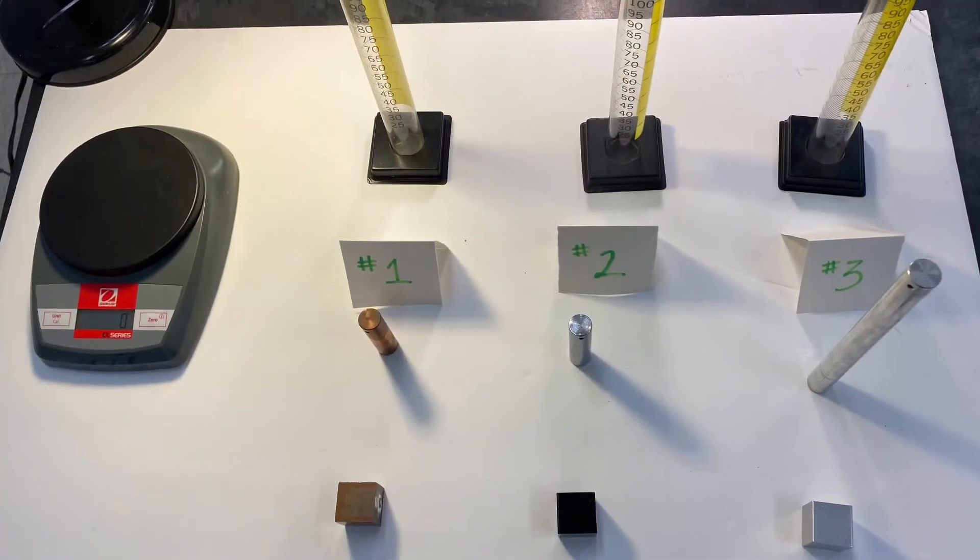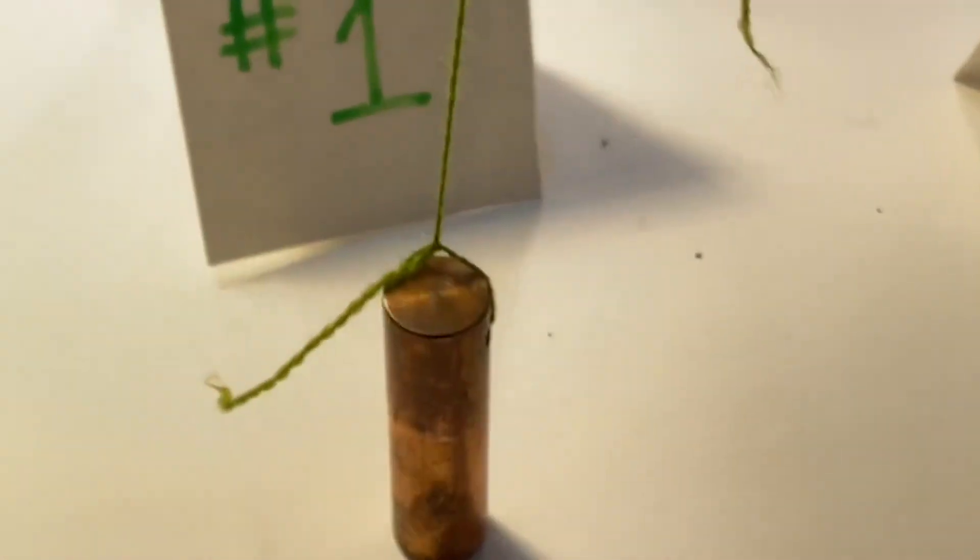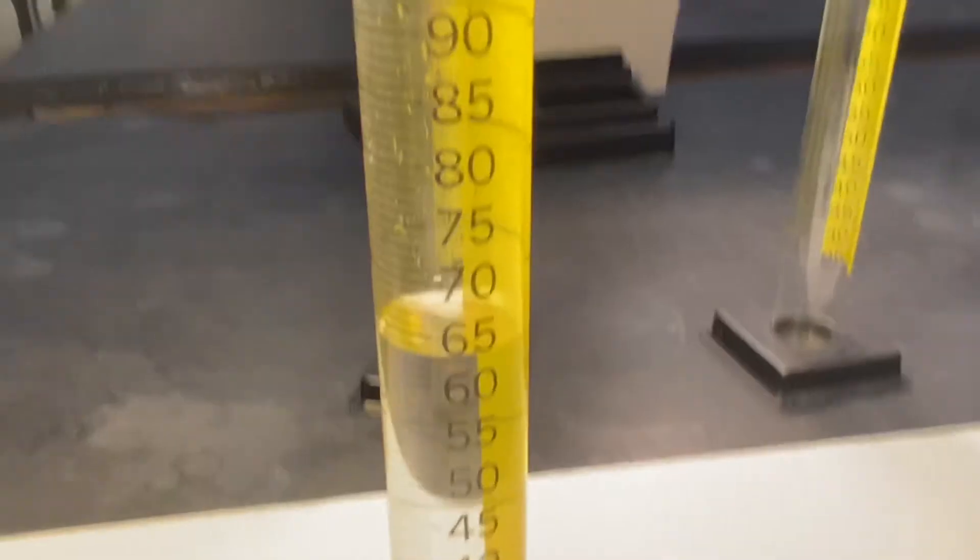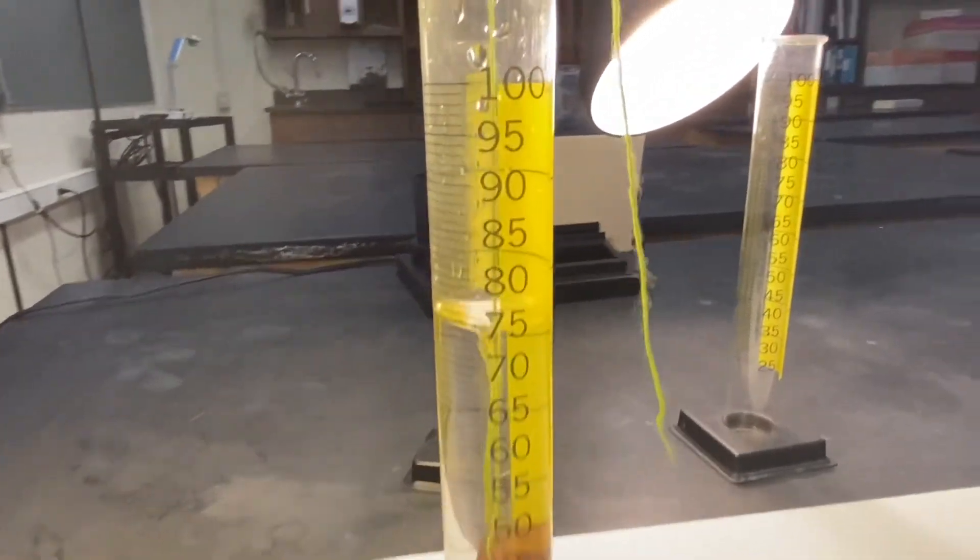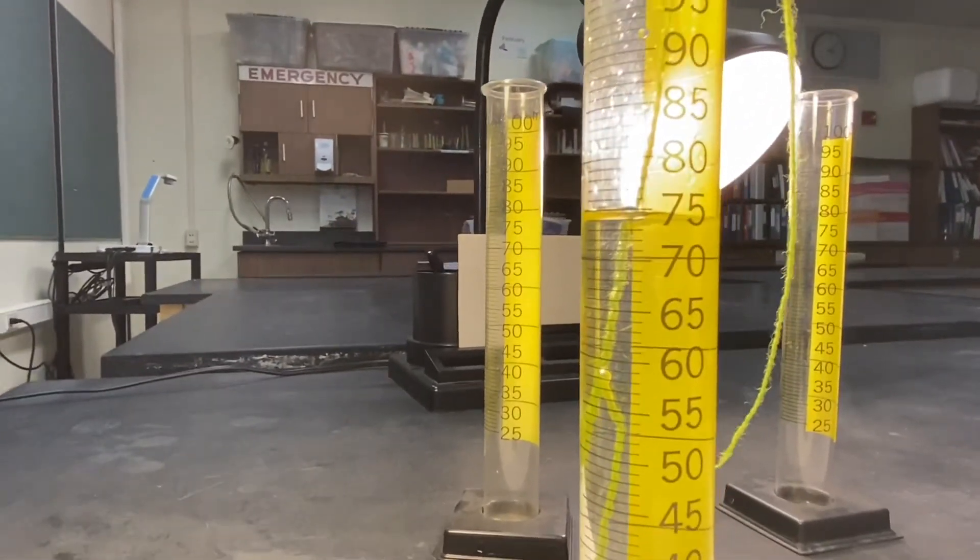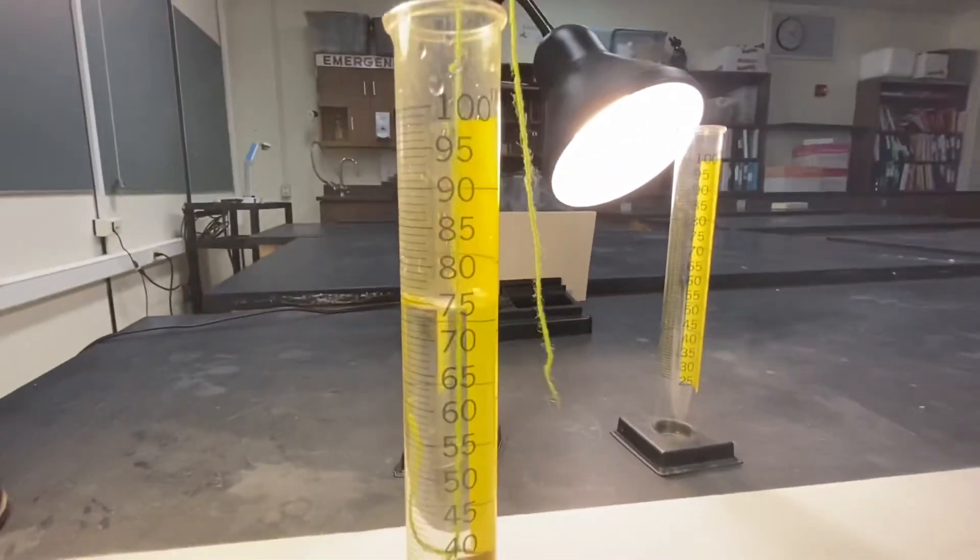We'll use volume displacement to find the volumes of the cylinders and begin with cylinder one. Cylinder number one. Initial volume 63, and this one looks to be 74.